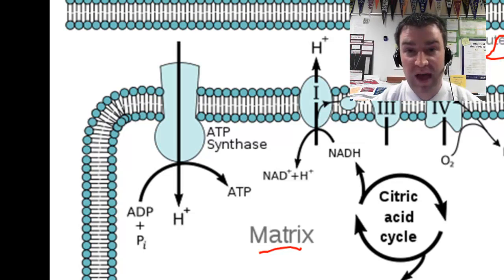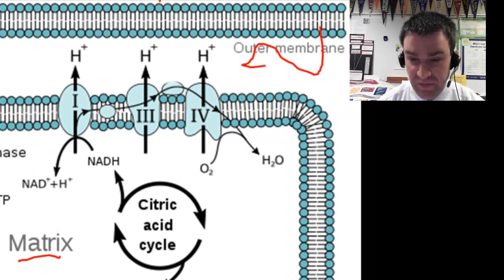If you're a prokaryote you have the same membrane proteins but you just have them in the only membrane you have which is the cell membrane. So what are the steps?